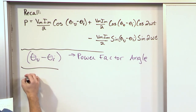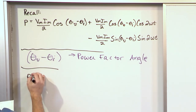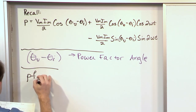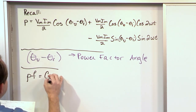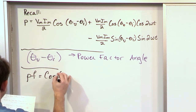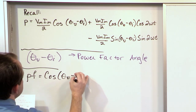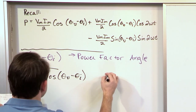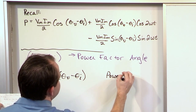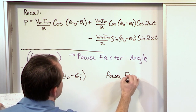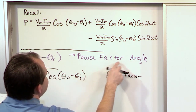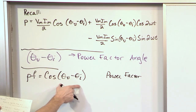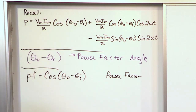Typically in problems you're not given this angle — you're given something related to it. We call it the power factor, abbreviated PF, and that's the cosine of this angle. So a lot of times you'll be given the power factor, which is cosine of theta V minus theta I. This is called the power factor.